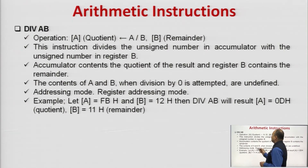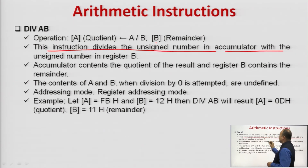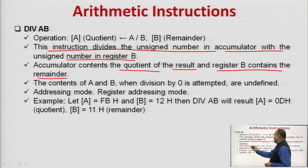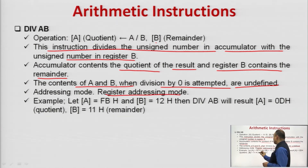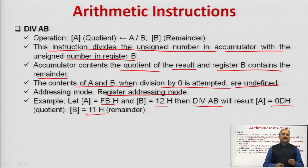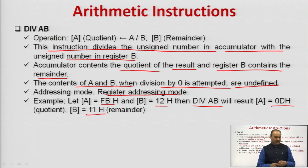Next is DIV AB. The operation performed is A divided by B. The quotient is stored in the accumulator and the remainder is stored in register B. This instruction divides the unsigned number in the accumulator by the unsigned number in register B. For example, if A = FBh and B = 12h, after DIV AB: A = 0Dh (quotient) and B = 11h (remainder).